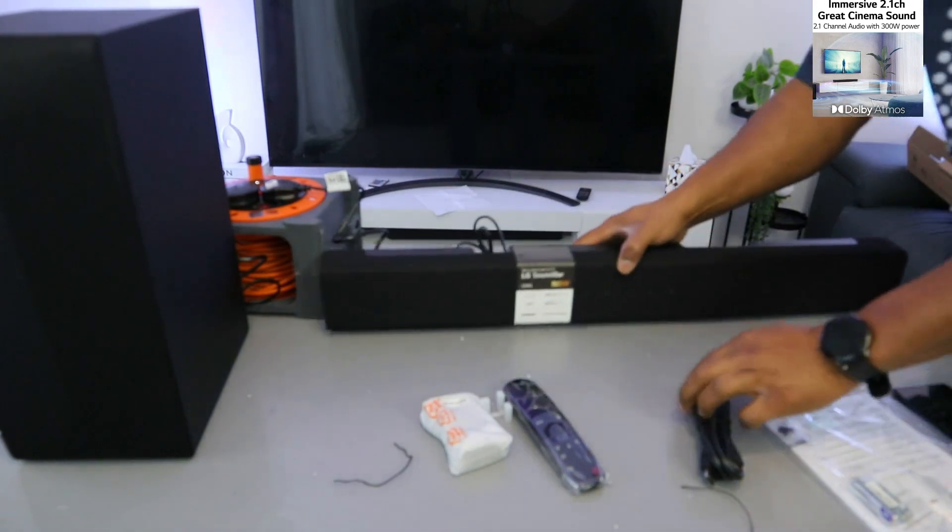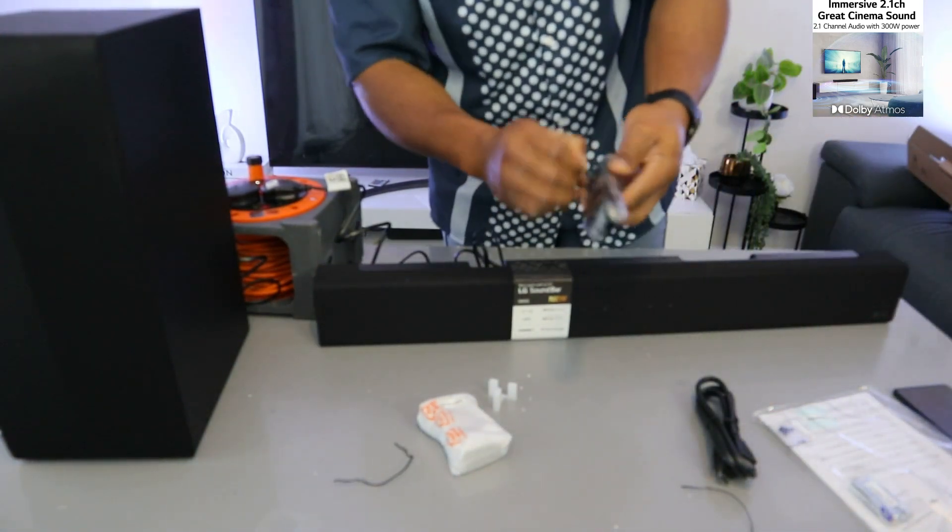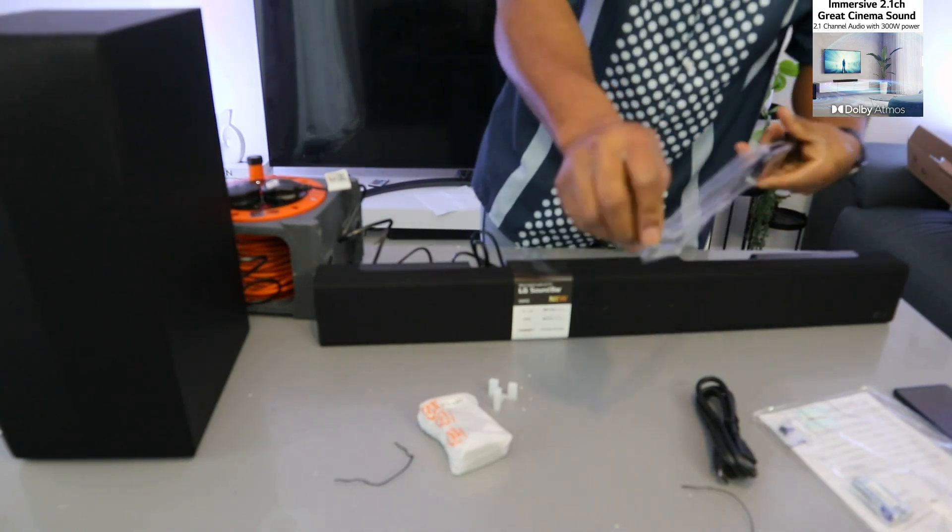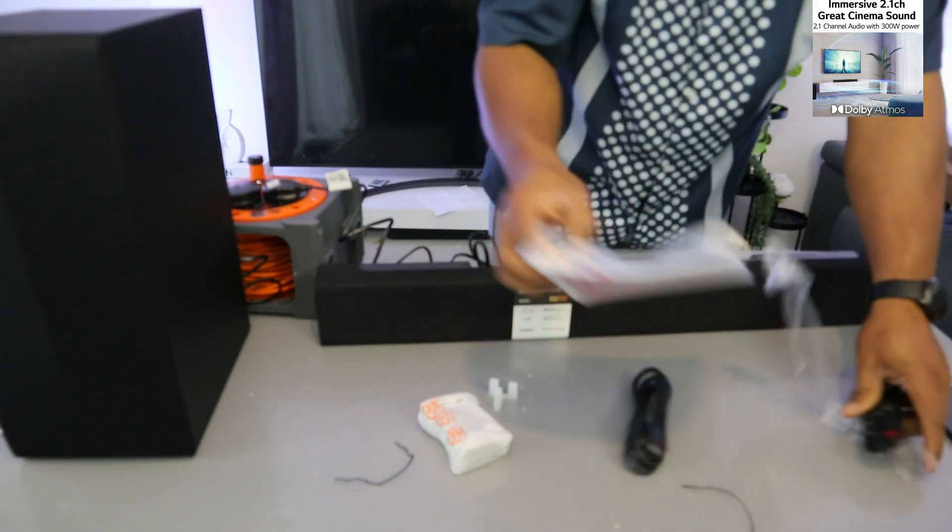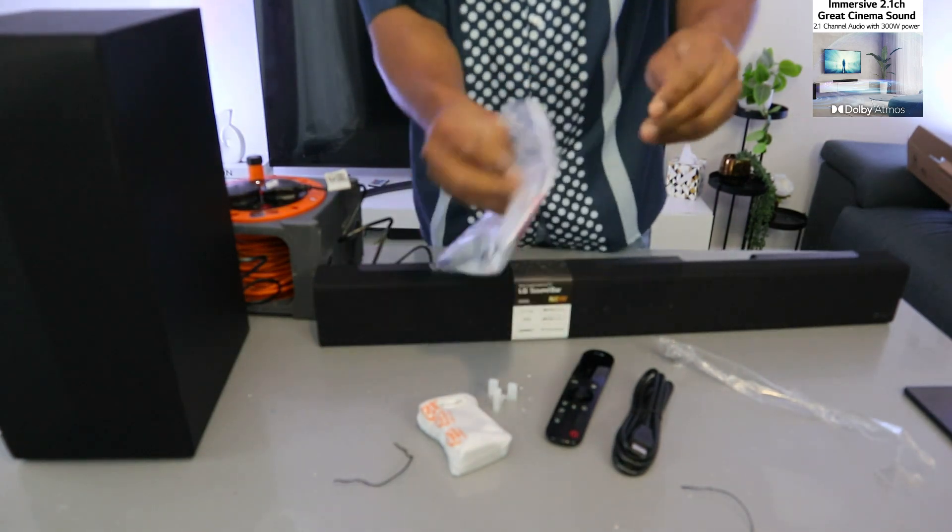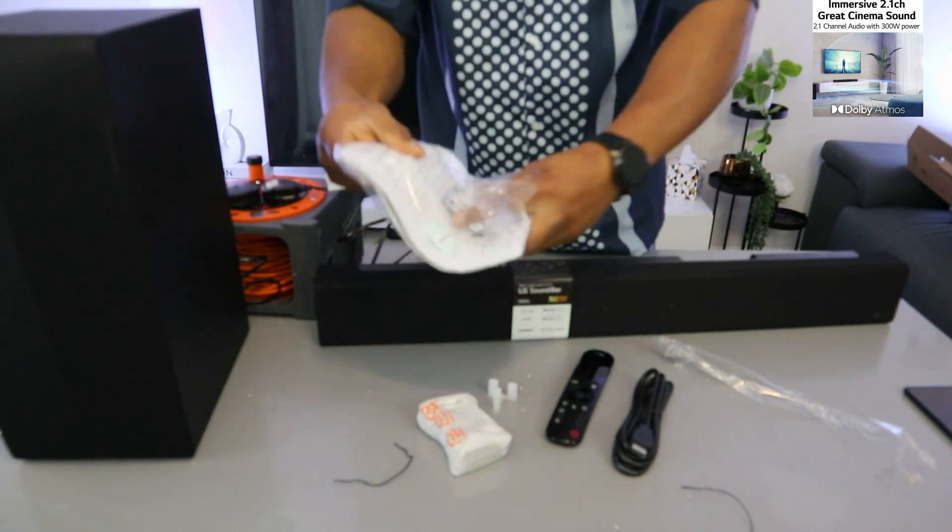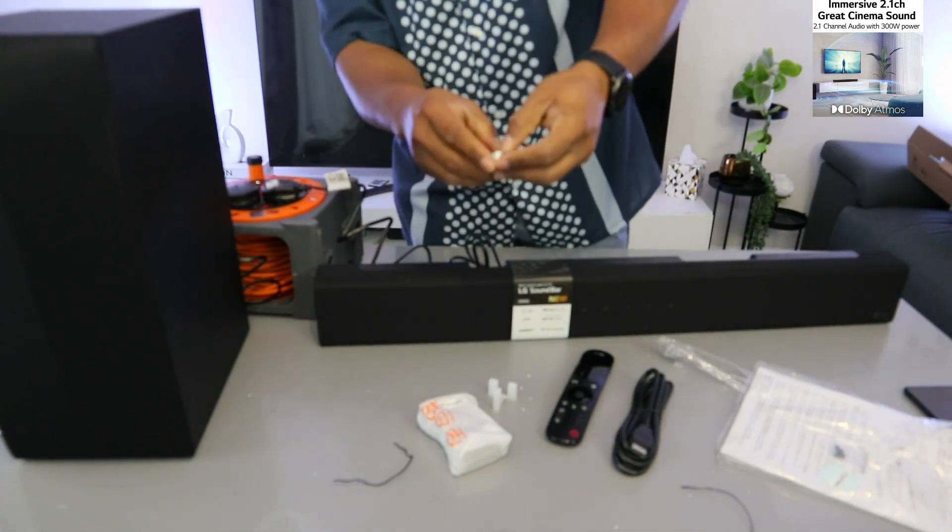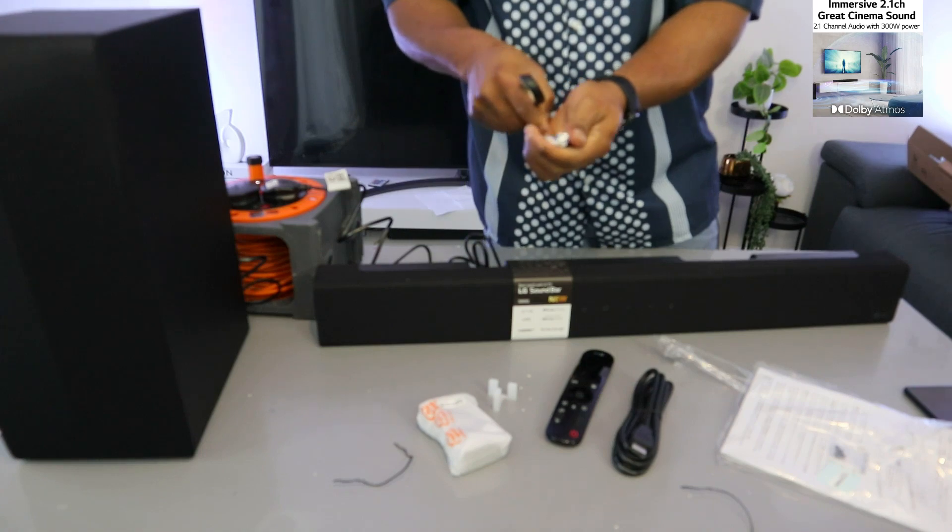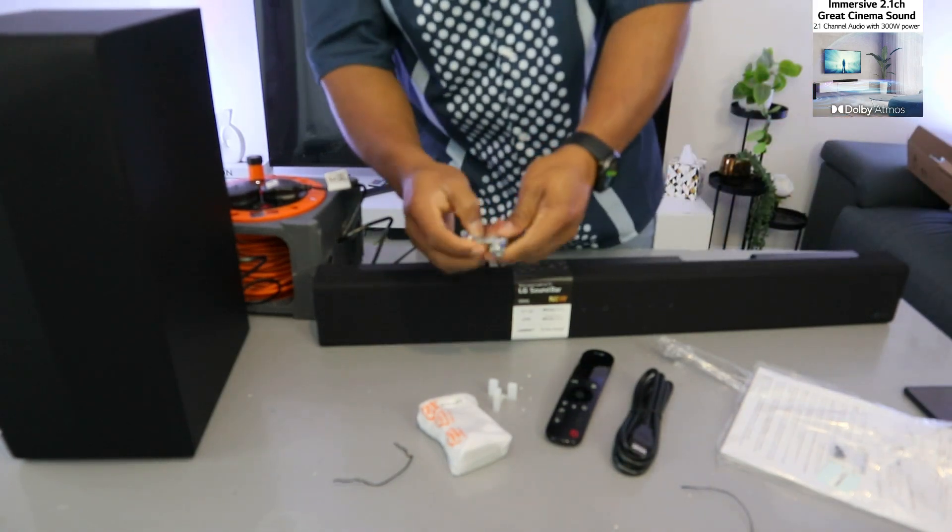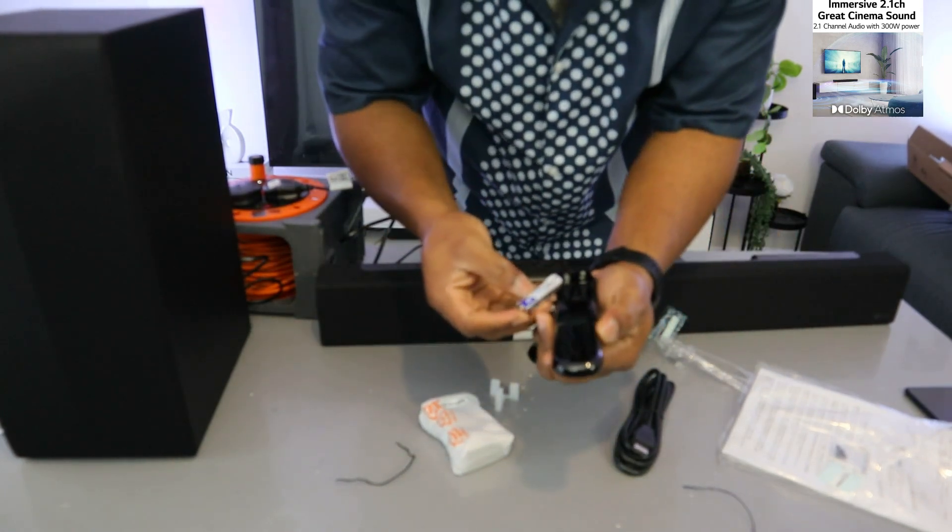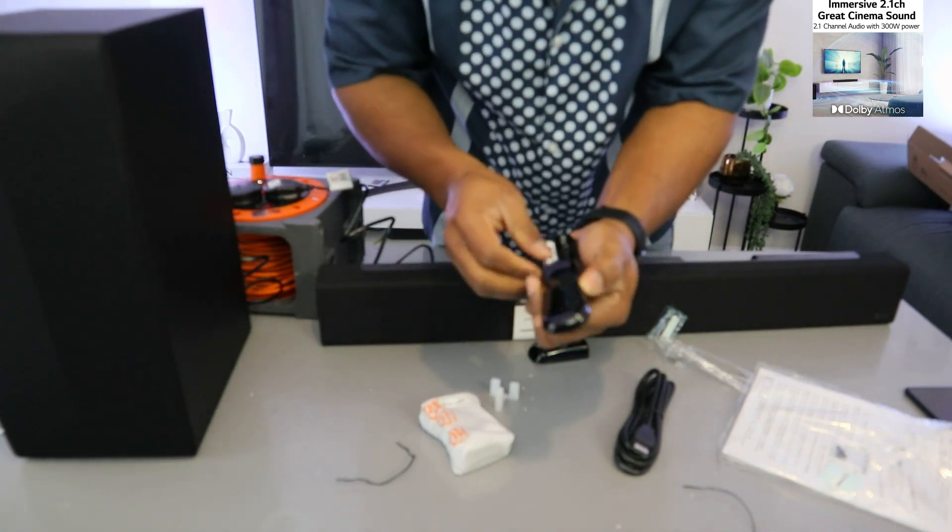The remote control is included. This is the battery. Double A battery is what the remote control is using, so push down, then take the positive to the positive end and negative to the negative end. Now push the remote back up.